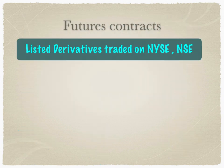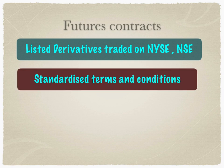Futures contracts are listed derivatives traded on stock exchanges like the New York Stock Exchange and the National Stock Exchange, and even on BSE we have listed derivatives. Since these contracts are traded on stock exchanges, the terms and conditions are very standardized — with respect to price ticks, settlement dates, and lot sizes. We'll be explaining each of these in this video.